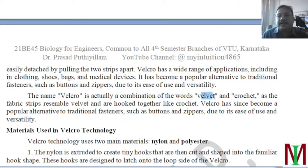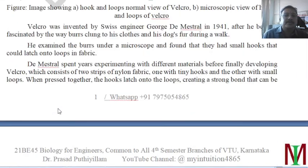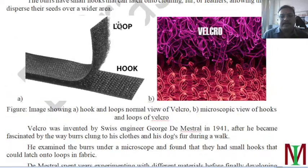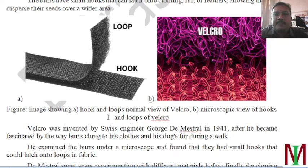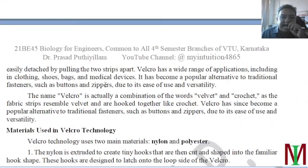The name 'velcro' is a combination of the words 'velvet' and 'crochet', representing fabric strips resembling velvet and hooks that connect like crochet. Velcro is used as a replacement for the button system because it is easy to apply, easy to remove, and forms a strong bond.